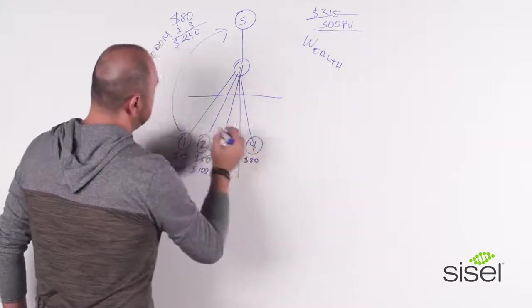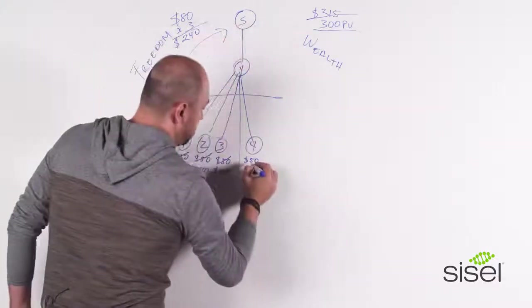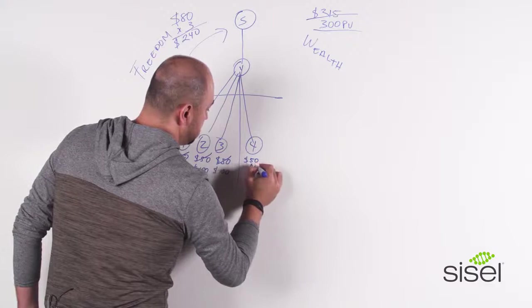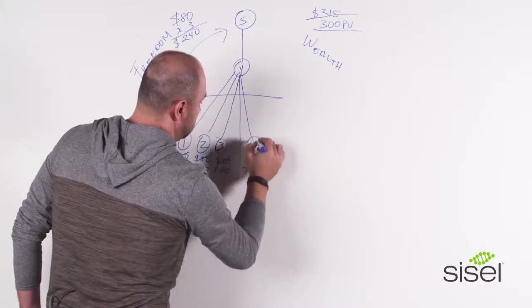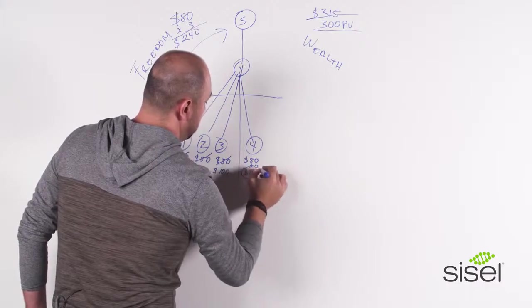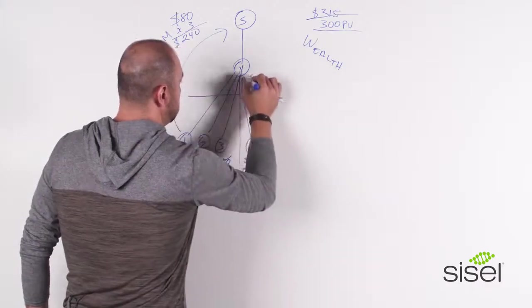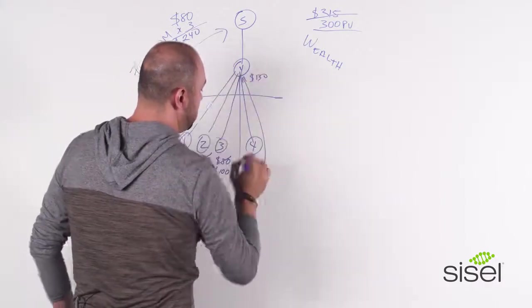Plus, instead of giving the $80 to your sponsor, the company is going to give the $80 to you for a total of $130. So you will get the $130 just by signing up number four.